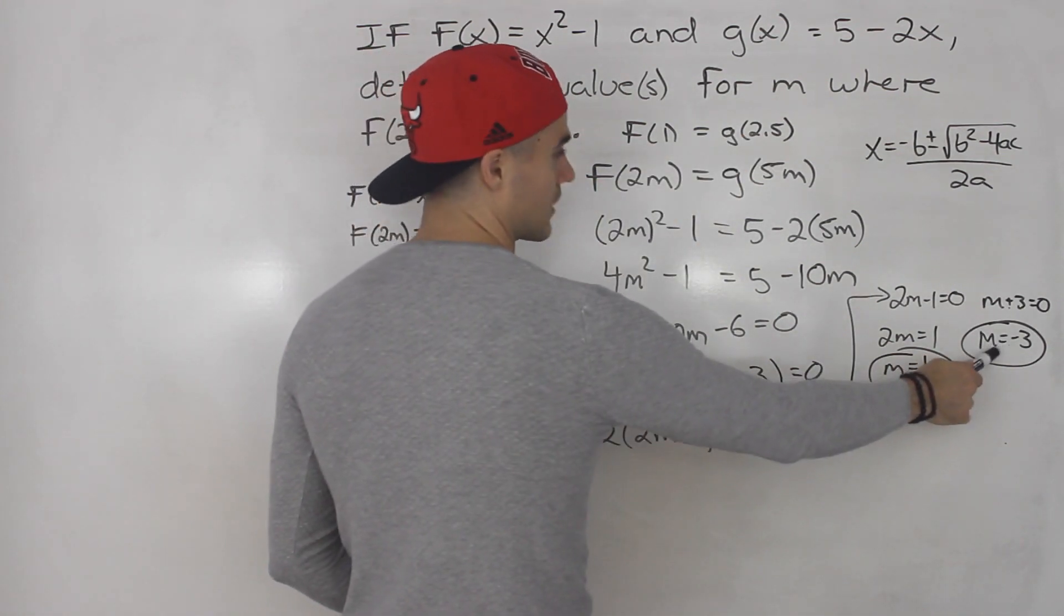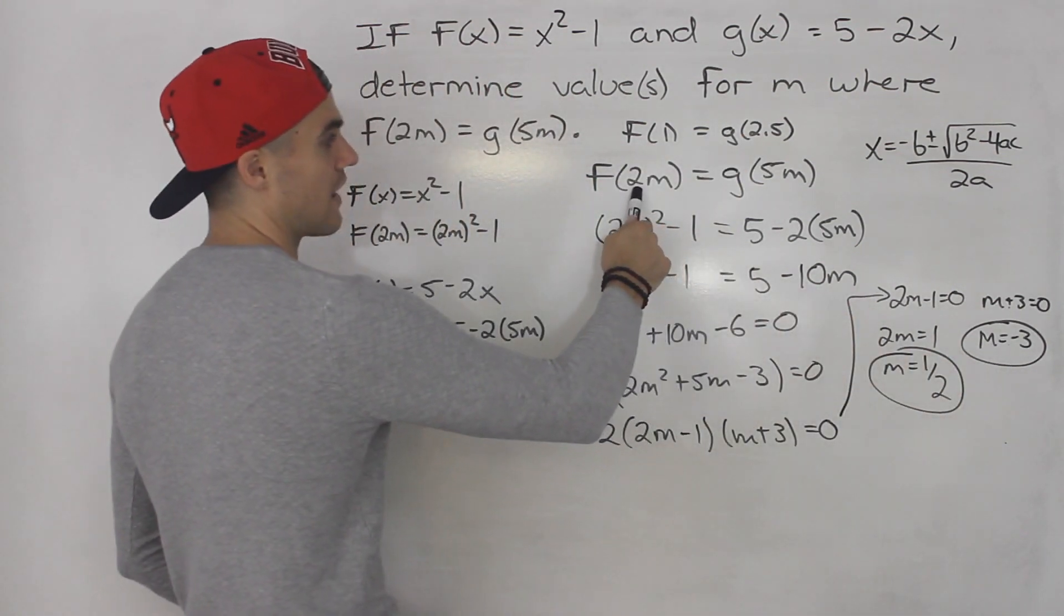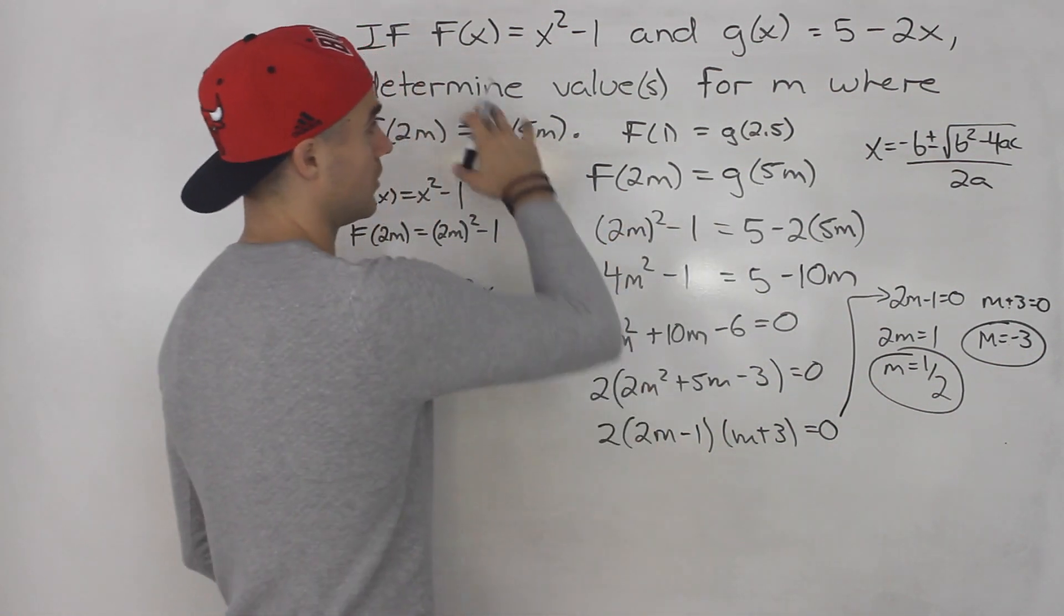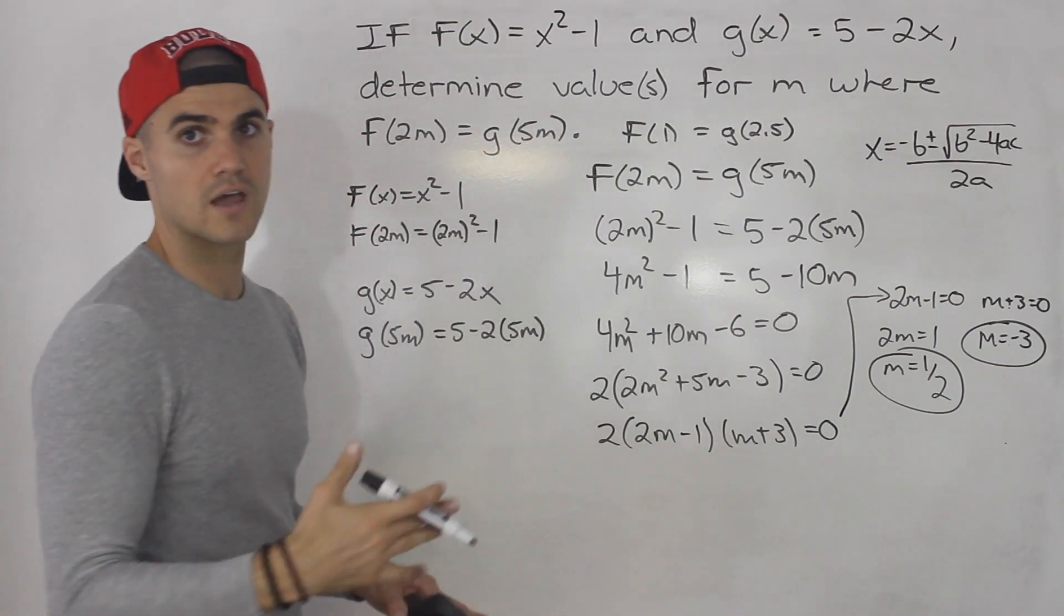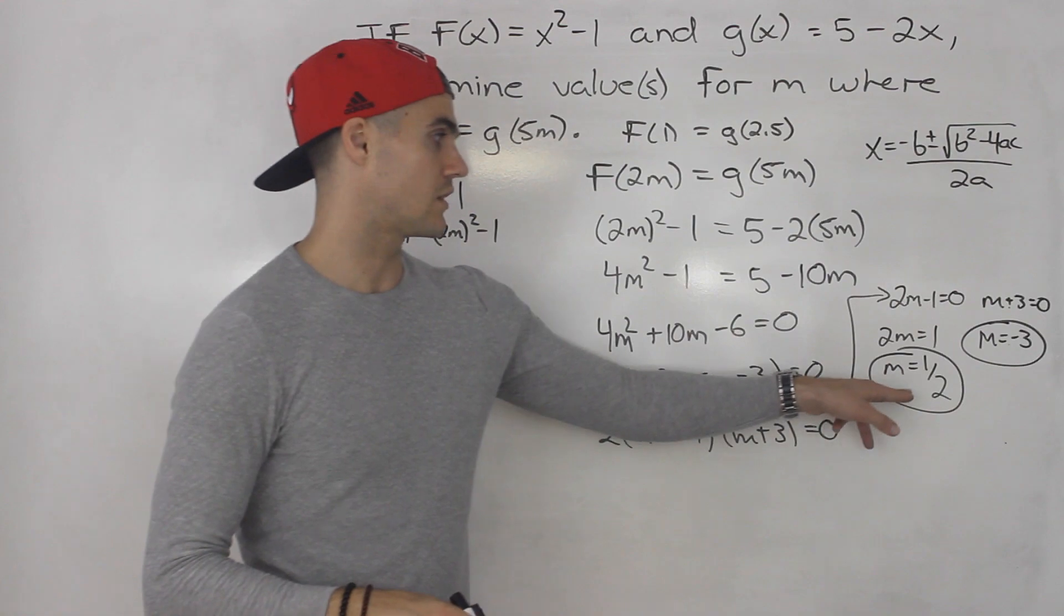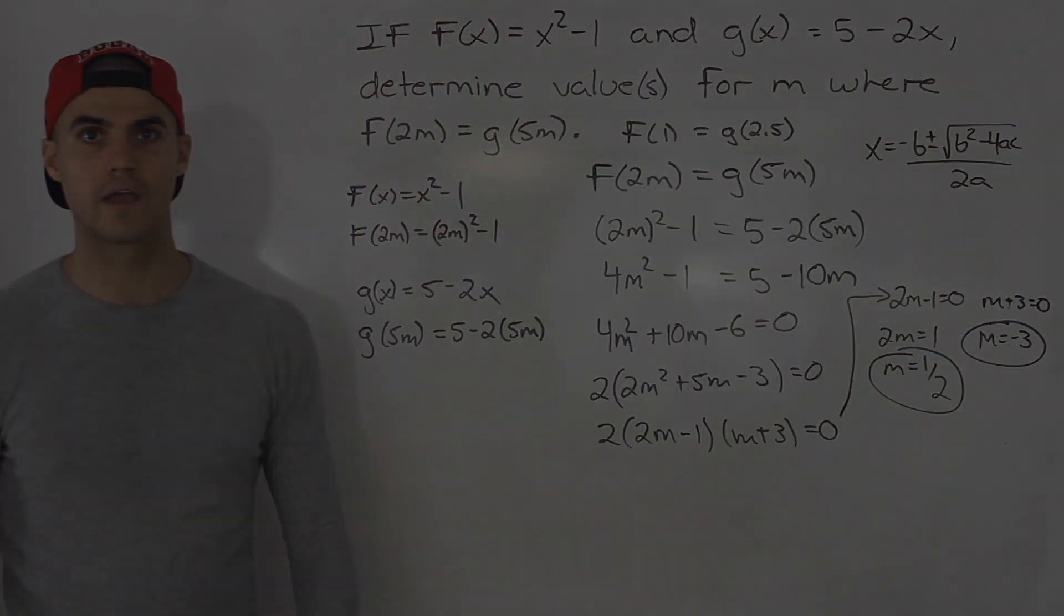You could do the same thing with m = -3. So you'd have f(-6) here, and g(-15) here. You could plug both of those in, and both sides should equal. That's a way to check your answer. But nevertheless, those are your final answers.